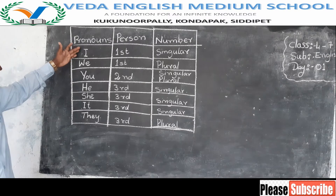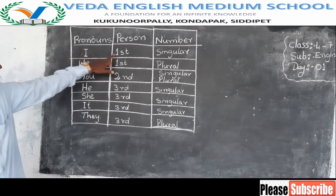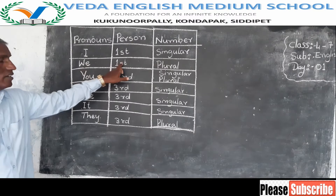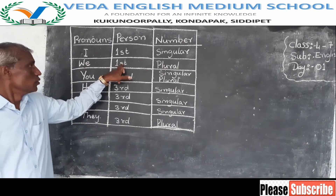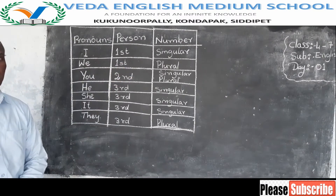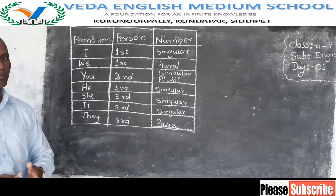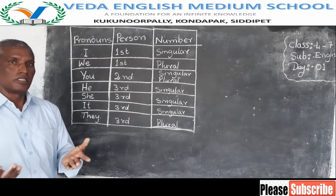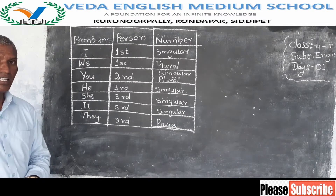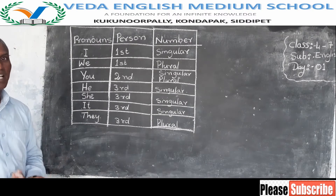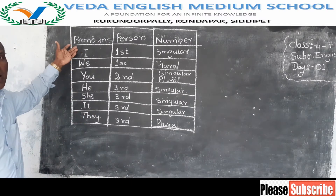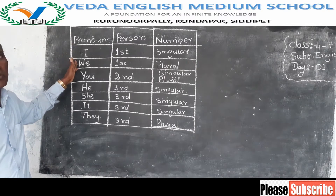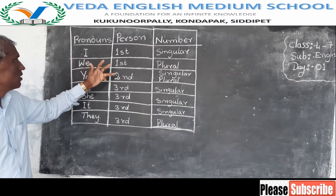Here, I is the first person. We is also first person. Who is the first person? Always the speaker is the first person. So when the speaker speaks about himself, he calls himself I. That's why it's called first person. And we is also first person, plural.